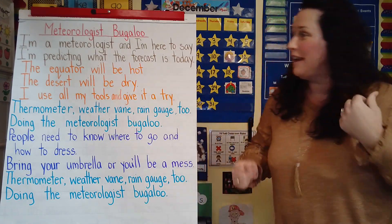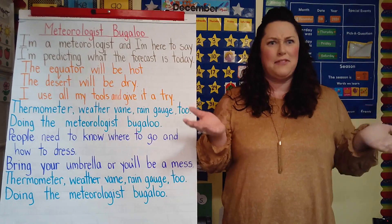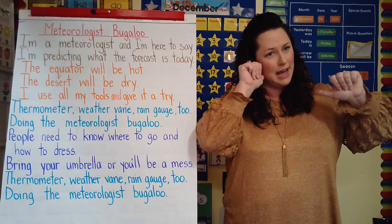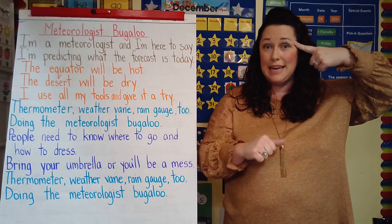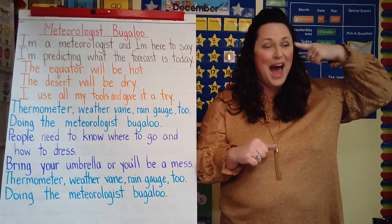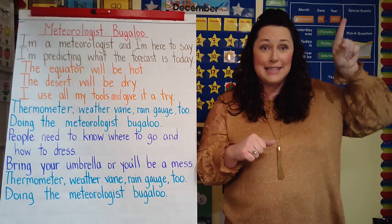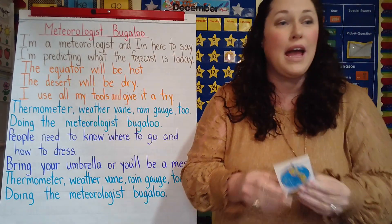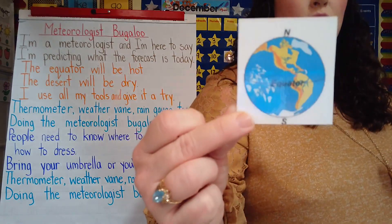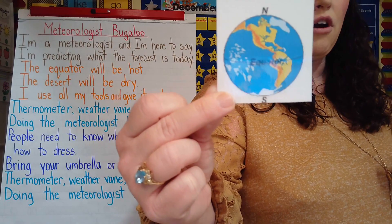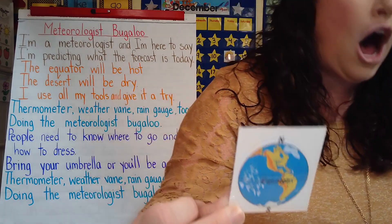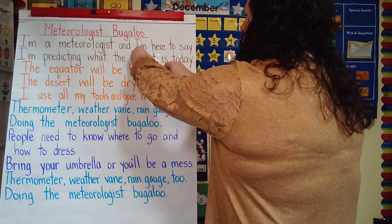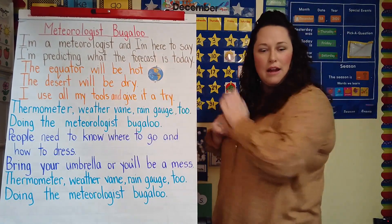Let's add some pictures to our chant now, so maybe we have a better idea of what some of these things are. If I'm a meteorologist, I'm going to point to myself, and I'm here to say I'm predicting — I'm going to point to my brain because that means we're thinking. I'm predicting what the forecast — that's the weather, what's coming out of the sky — is today. When I say the equator will be hot, look, this is a picture of the equator. It's right in the center of our Earth and that is where it is the hottest on Earth. So when I say the equator will be hot, it's the spot right here in the middle.